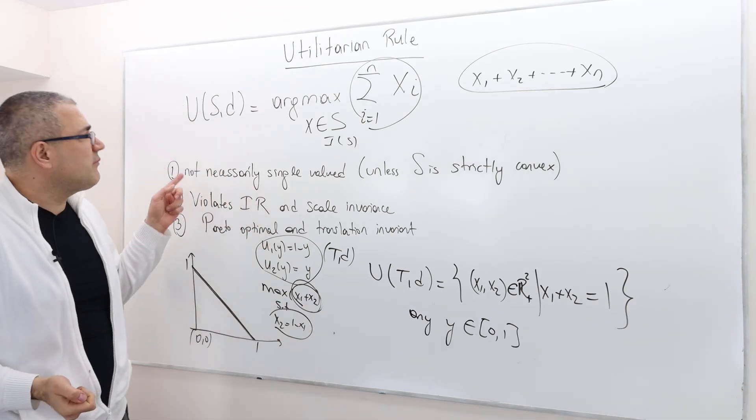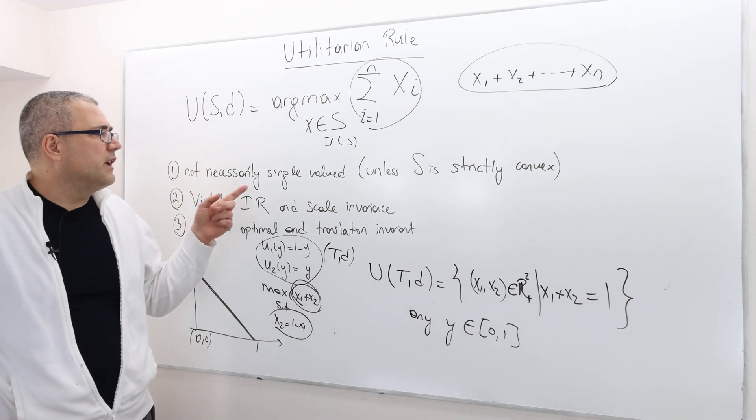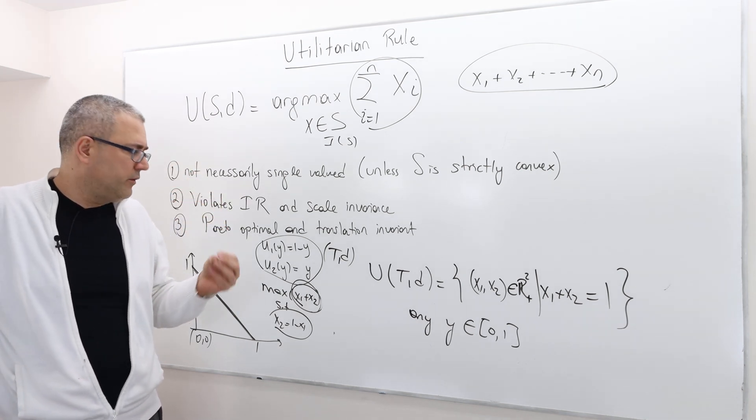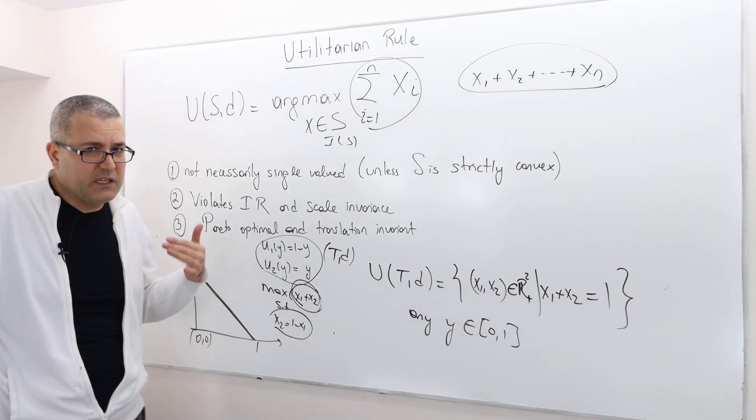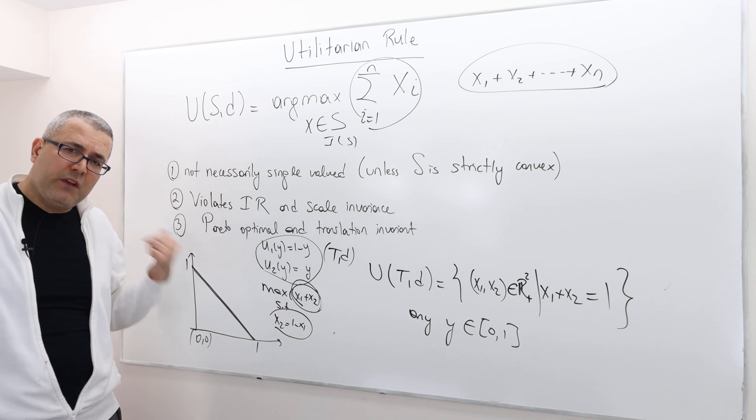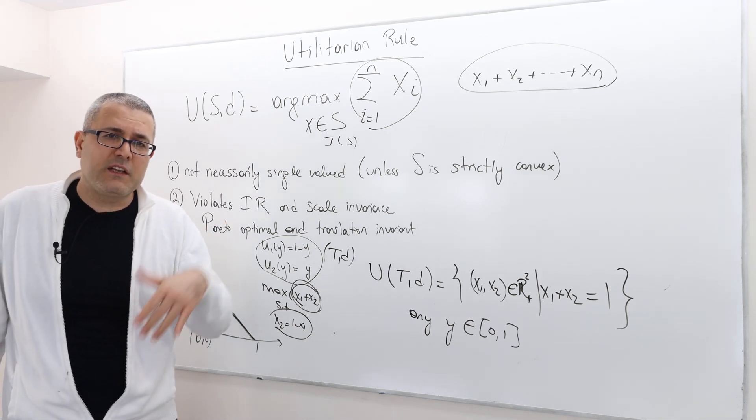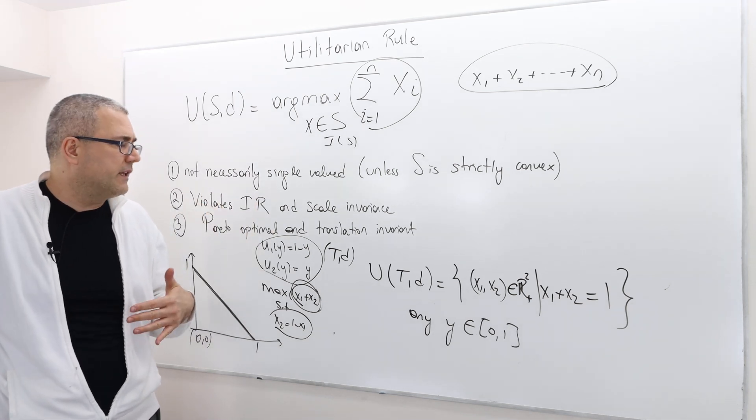As I said, the utilitarian rule is not necessarily single-valued, because here, this bargaining problem, the set is not strictly convex, it's convex. The previous example was strictly convex, and therefore the solution was unique.